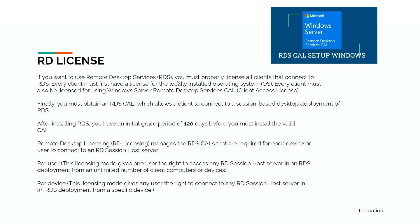If you want to use Remote Desktop, you must properly license all clients connecting to RDS. Every client must have a license for the locally installed operating system, and must also be licensed for Windows Server Remote Desktop Services CALs. You must buy RDS CALs, which allow clients to connect to a session-based desktop deployment. After installing RDS for the first time, you have an initial grace period of 120 days before installing a valid CAL. RD Licensing manages RDS CALs per device or per user. Per-user licensing gives one user the right to access any RD Session Host from an unlimited number of devices. Per-device licensing gives any user the right to connect from a specific device, which is less expensive.